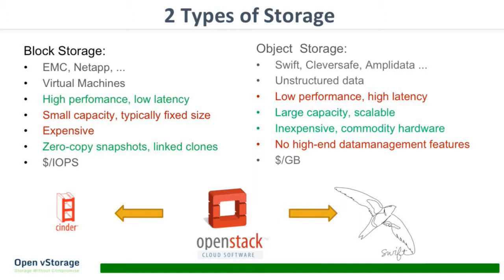If you look at the storage market or the storage landscape, there are basically two types of storage: block storage and object storage. For block storage, you've got big brand names like EMC and NetApp. They create expensive, high-performance, low-latency storage that is perfect for virtual machines, with cool data management features like thin cloning and zero-copy snapshots. But they're relatively small in capacity and not very flexible to scale up or out.